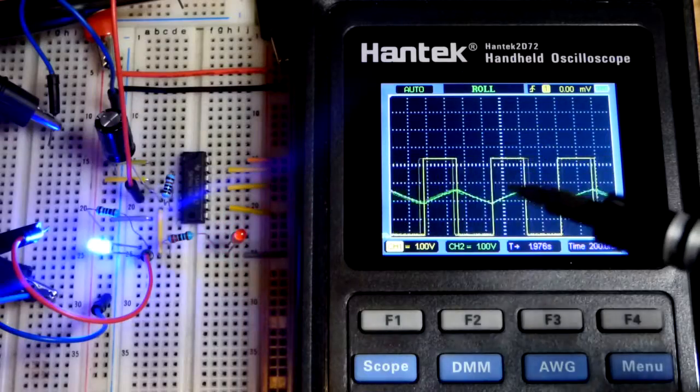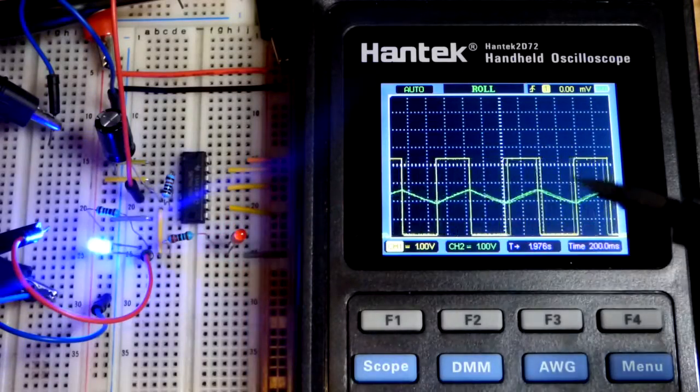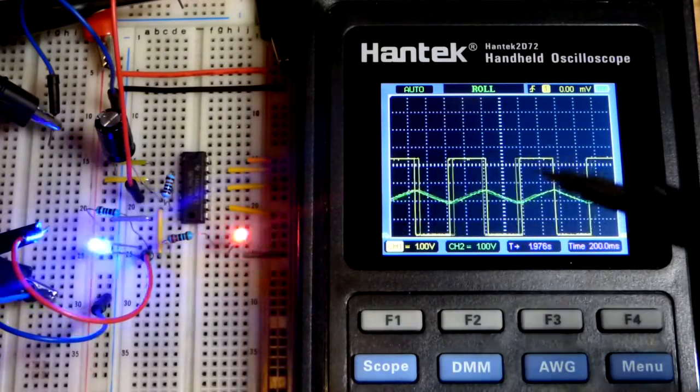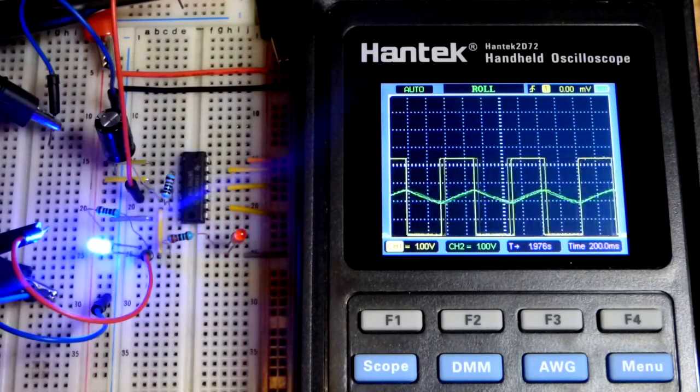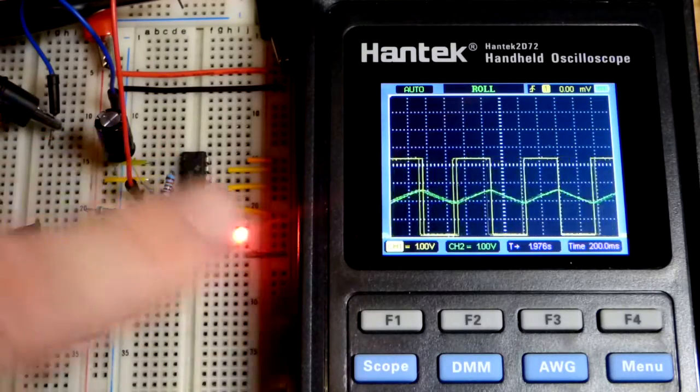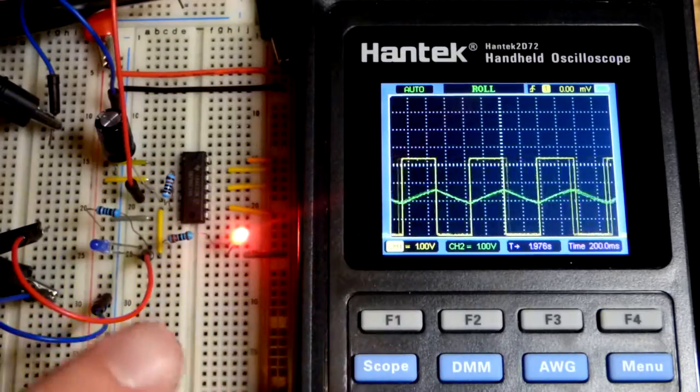And you can see that when the capacitor discharges to a low enough value, then the output goes high right there. So the output's going the opposite direction of what the capacitor is doing when it comes to voltage changes.